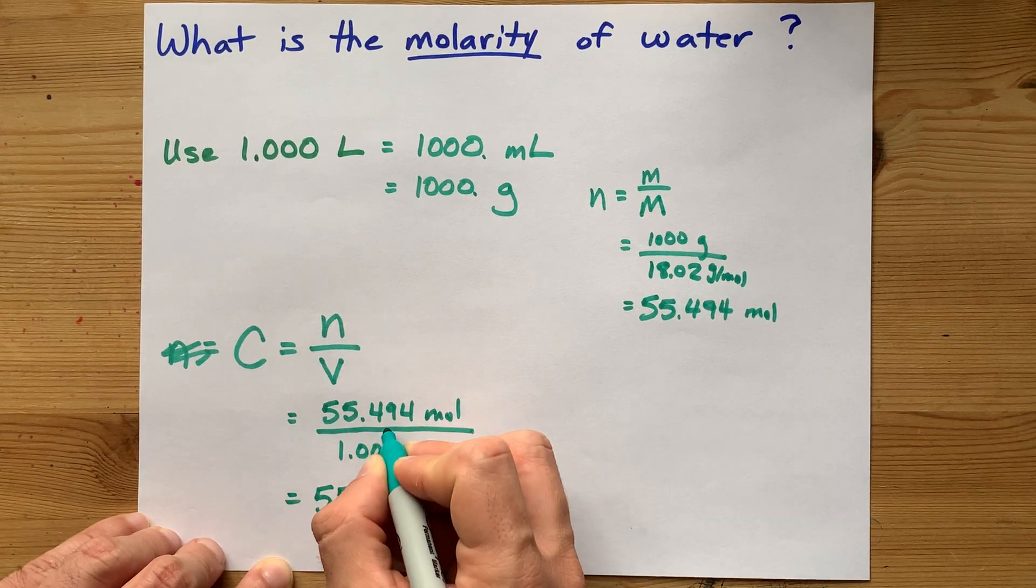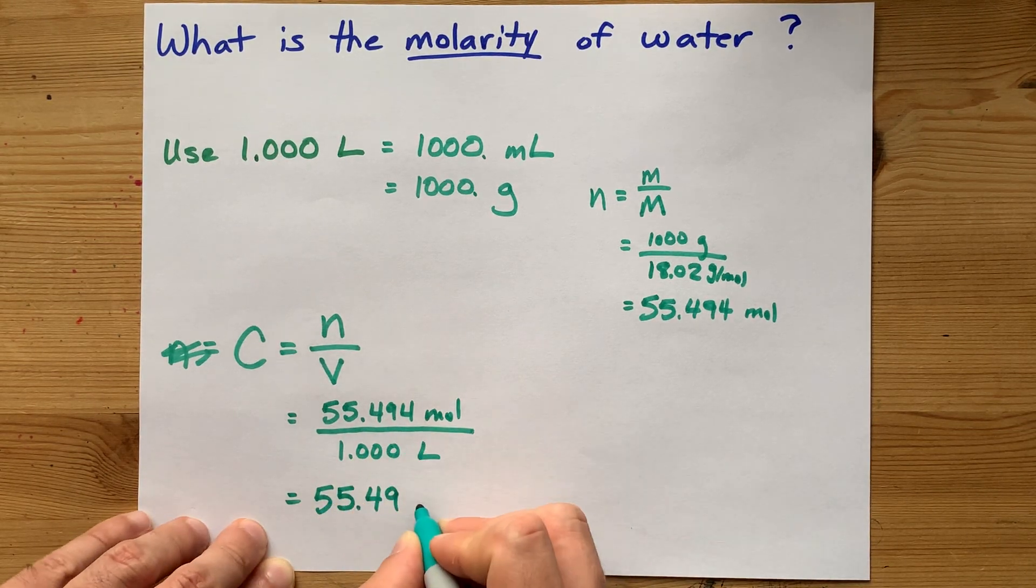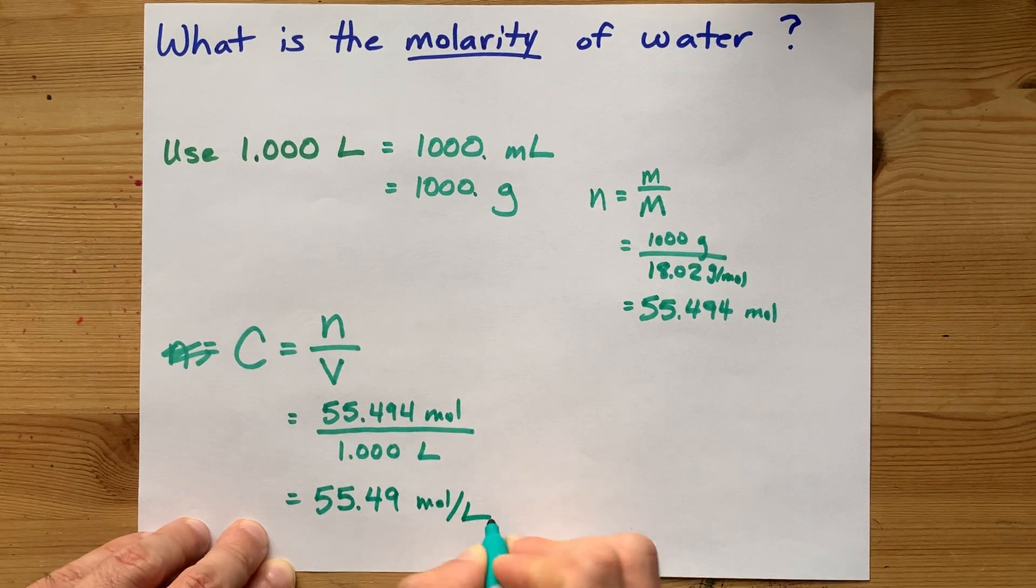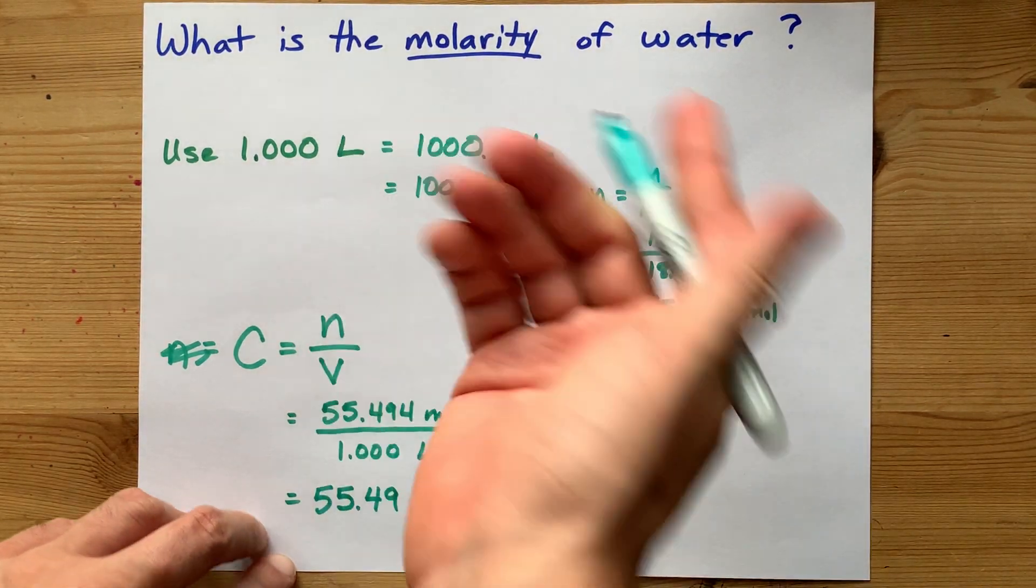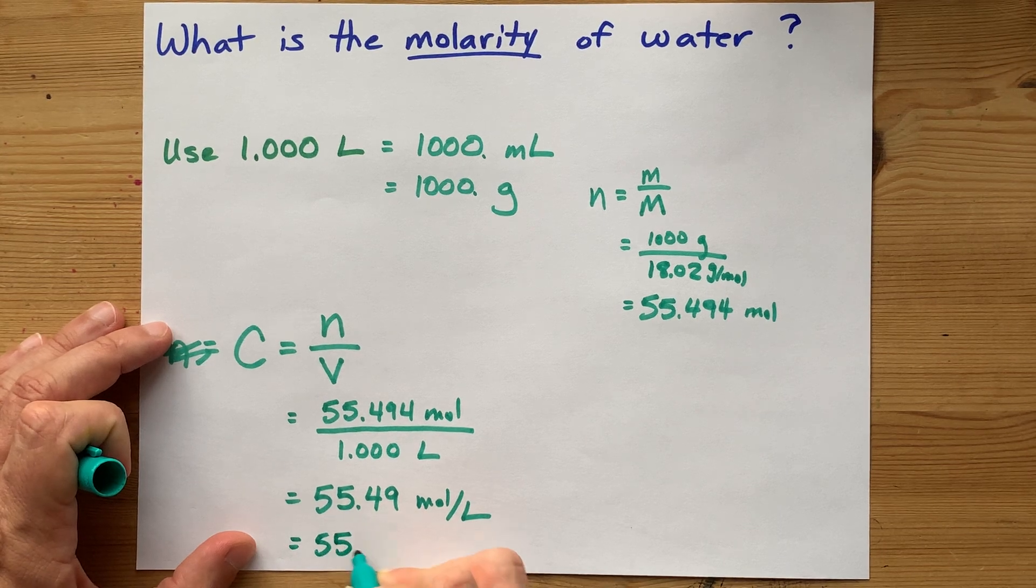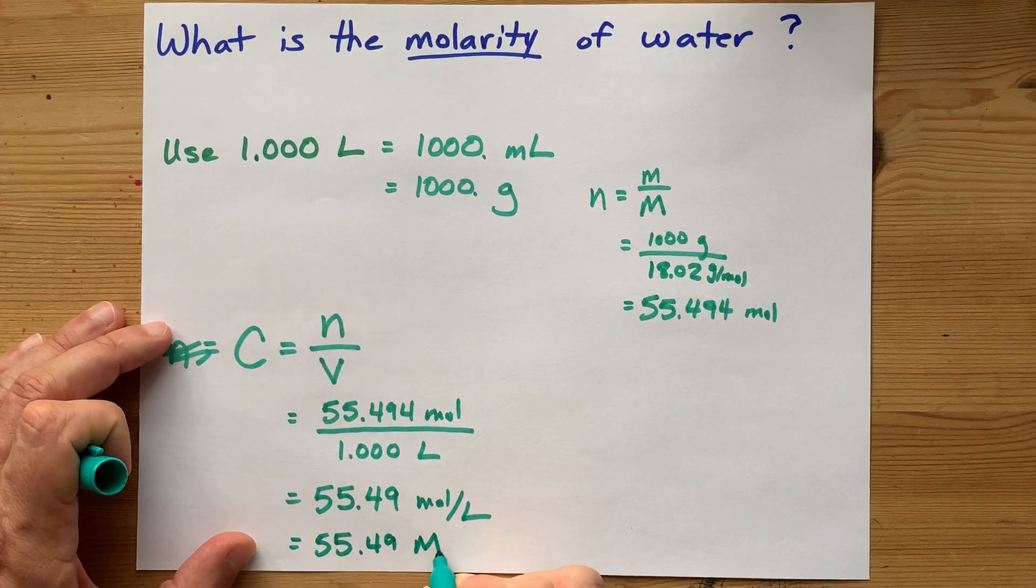That's 55.49 moles per liter, or because you were asked for molarity, you can call it 55.49 molar.